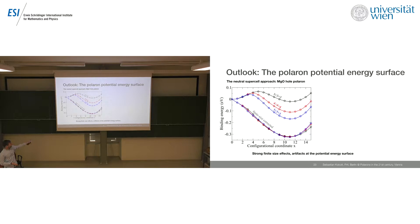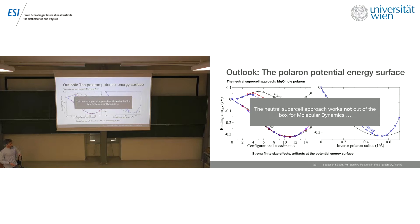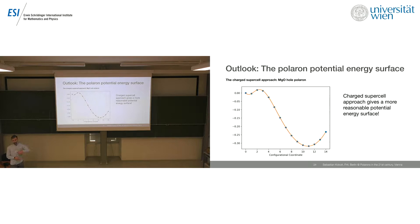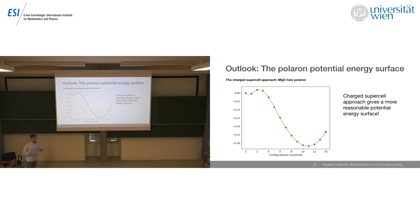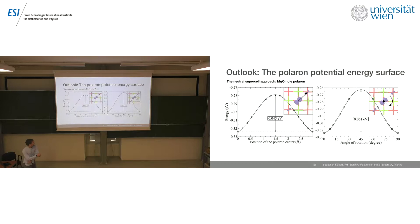If you use a small cell, the polaron would just hop back and forth, but this is the wrong behavior. Nevertheless, for finding the initial polaron geometry this is still a nice method. The good message is, if you use the charged supercell approach, the potential energy is much more reasonable. There is still something here, might be numerical inaccuracy, but the charged supercell approach gives you much more reasonable polaron potential energy than the neutral supercell approach. So that's basically a bad message, because this means for MD calculations we still have to use HSE.